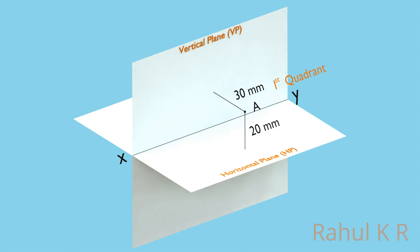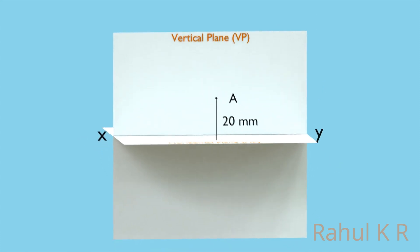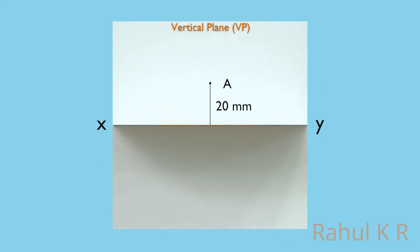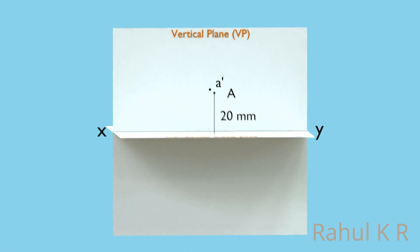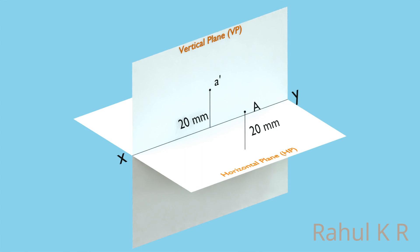The front view is obtained by looking from this direction. The front view of the point A is a point and is obtained on the VP. We denote it as small letter A dash. This point A dash is 20 millimeters above the XY line, same as the distance the point A is from the HP. Alternatively, the front view can also be obtained by extending the perpendicular visual ray from the point A to the vertical plane.